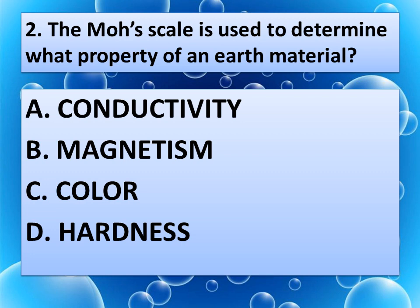The Mohs scale is used to determine what property of an earth material? Option A: Conductivity. Option B: Magnetism. Option C: Color. Or option D: Hardness.